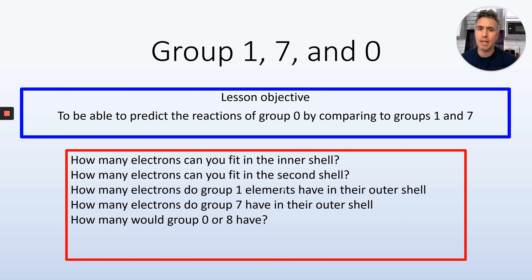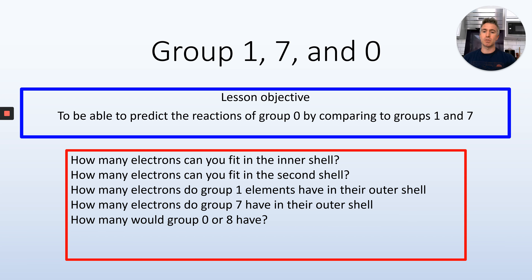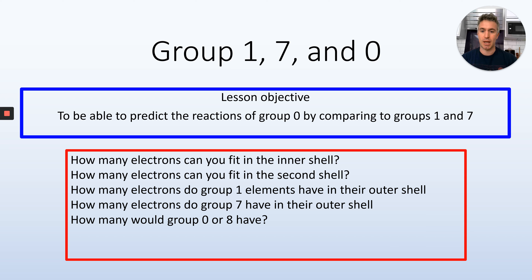It's the end of the chemistry unit, so for science today we're going to review group 1, group 7, and group 0. We'll do the reactivity series next lesson, and some questions, maybe even a test. But let's start off — how many electrons can you fit on the inner shell of an atom? How many can you fit on the second shell? How many electrons do group 1 have in their outer shell? How many do group 7 have? And how many would group 0 have?